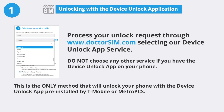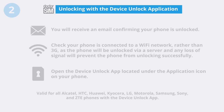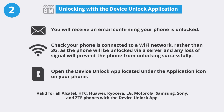You will not be prompted for an unlock code, as your phone will be unlocked via Android server. You will receive an email confirming your phone is unlocked. Check your phone is connected to a Wi-Fi network rather than 3G, as the phone will be unlocked via a server and any loss of signal will prevent the phone from unlocking successfully.